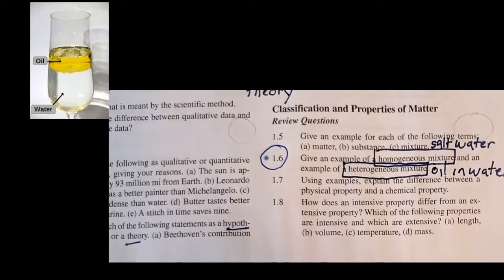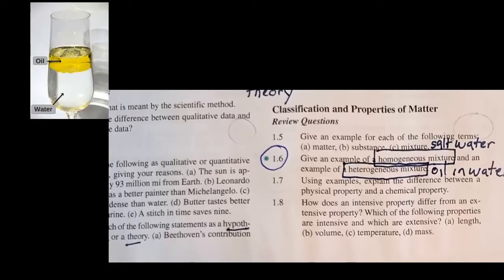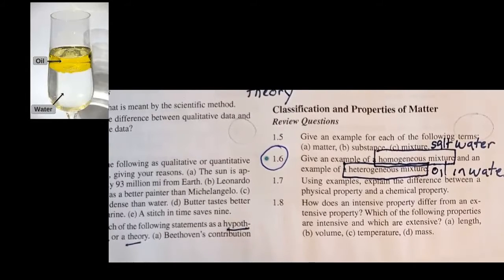The oil molecules will want to get away from the water molecules. The water molecules, in turn, want to get away from the oil molecules. They hate each other, and when they hate each other, they partition. So oil and water is an example of a heterogeneous mixture.